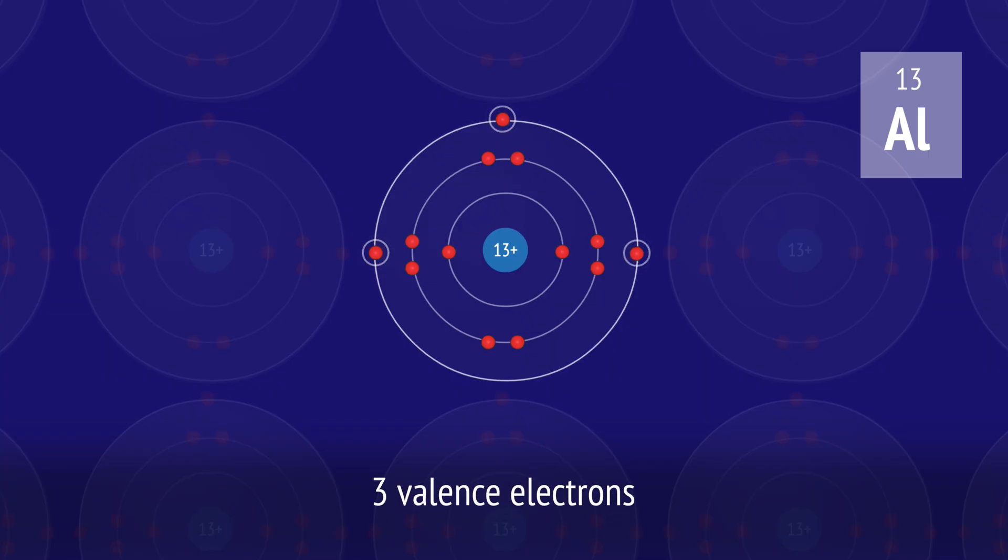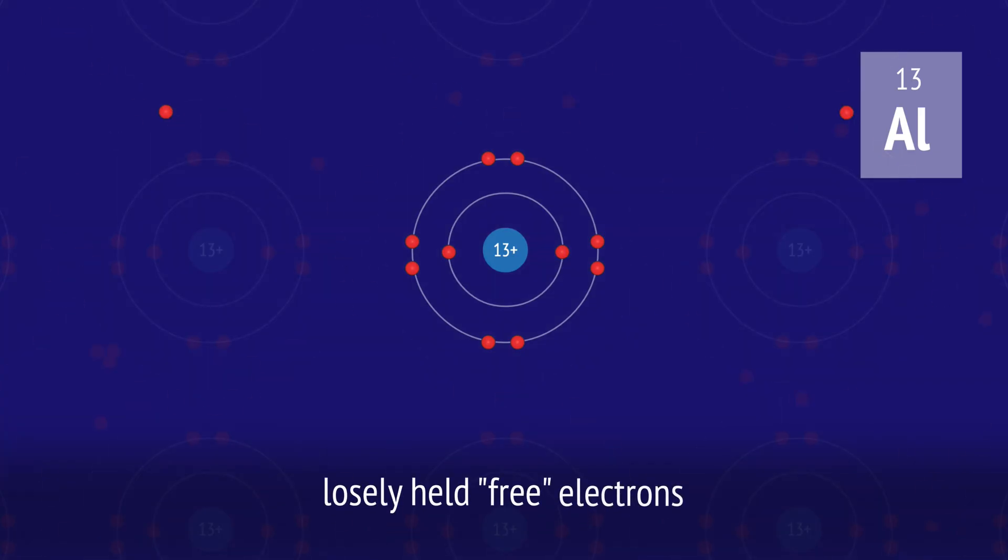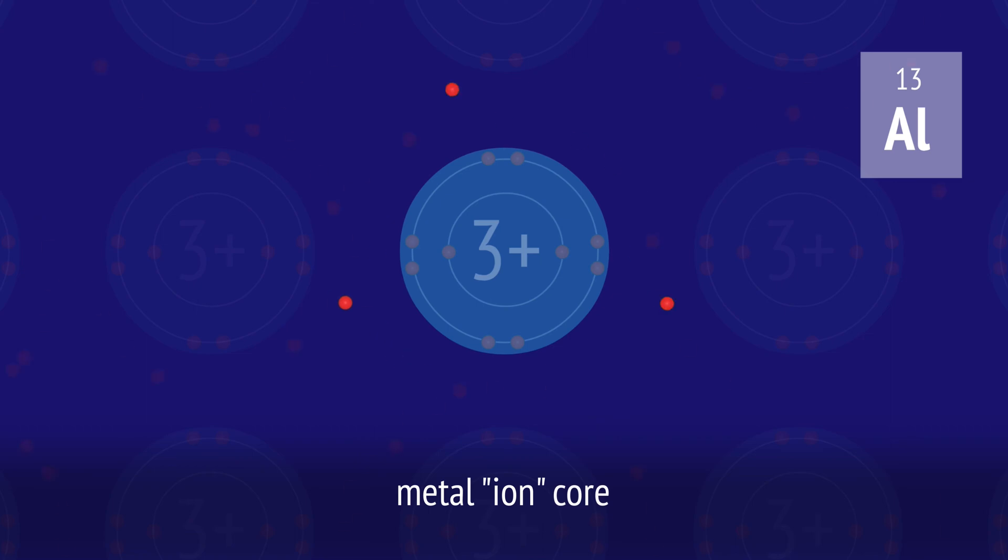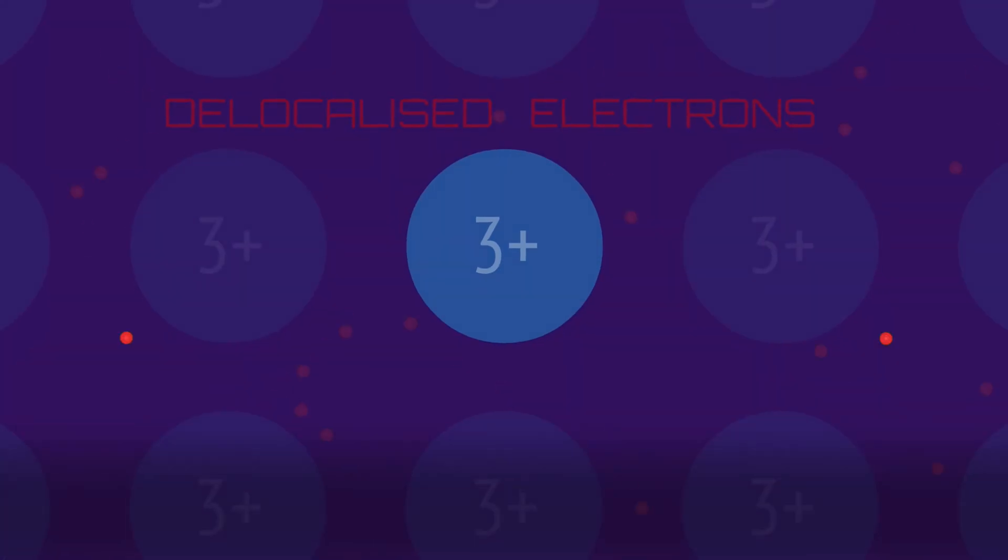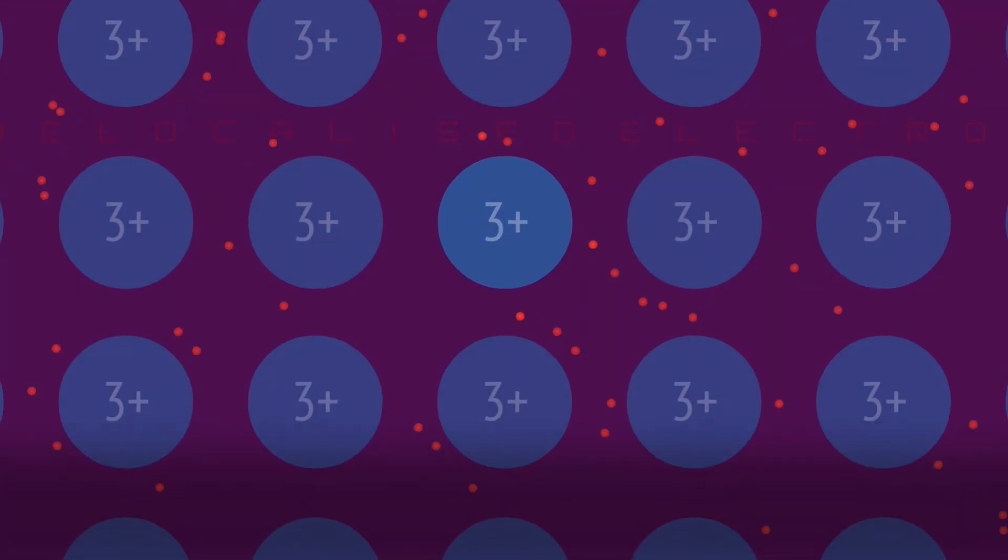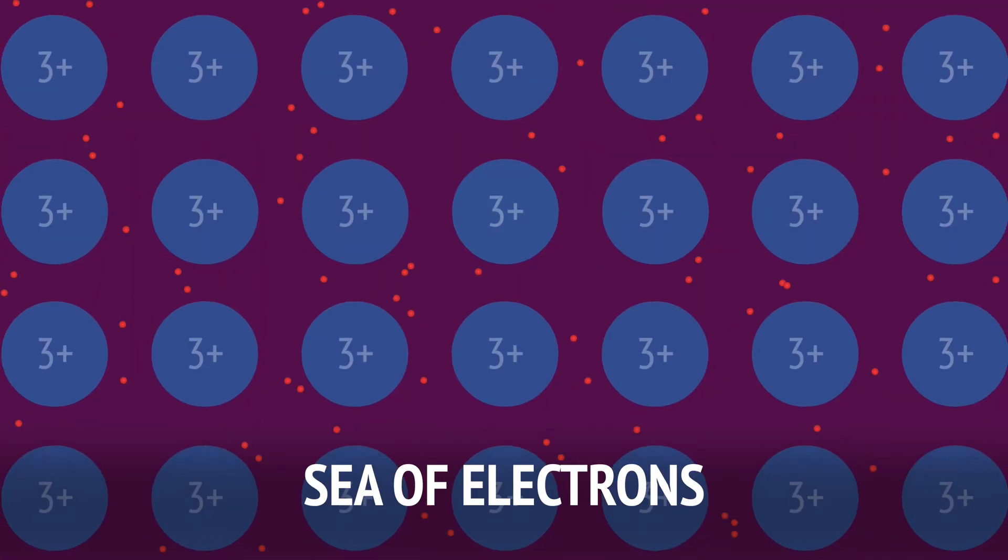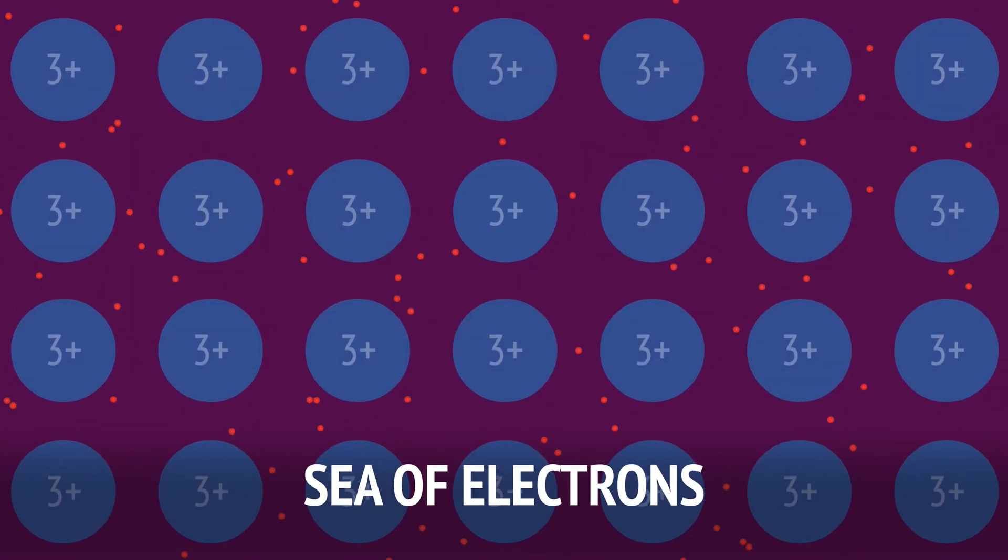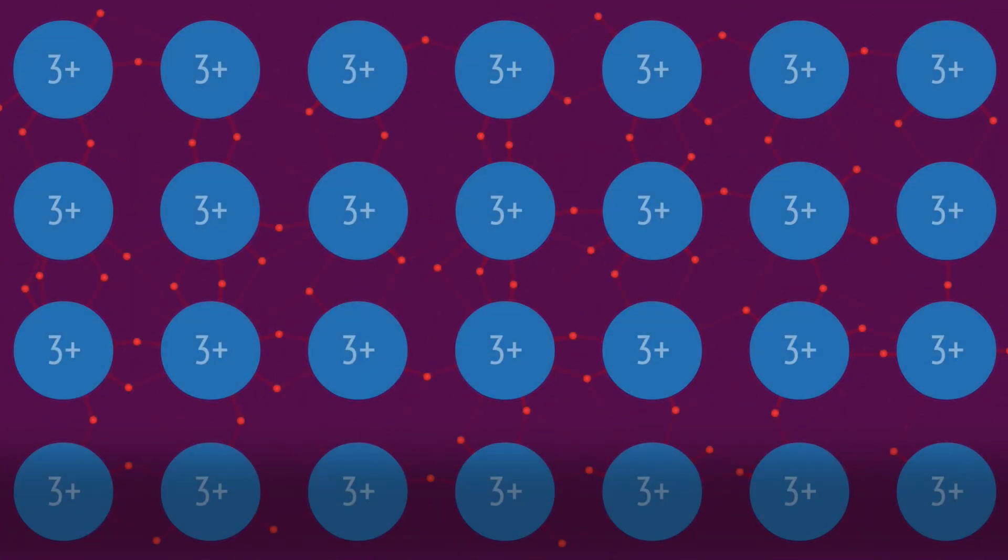Aluminium atoms with 13 protons and 13 electrons have 3 valence electrons. These outer electrons become detached from the atom and are free to move throughout the structure. Now, the remaining core of each aluminium atom is positively charged, like a cation with a 3-plus charge. The free or delocalized electrons create a sea of electrons surrounding the metal cations. And it's the electrostatic attraction between these negative electrons and positive cations that holds the lattice together. We call this metallic bonding.